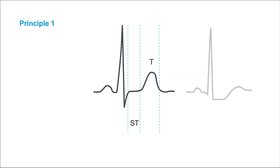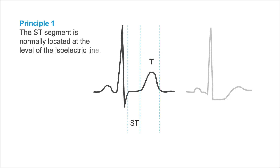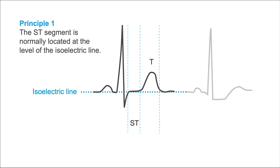Before we get started, I would like to give you two simple principles about the ST-segment and the T-wave. Principle number one says that the ST-segment is located at the level of the isoelectric line. To find the isoelectric line, go to the segment of the ECG that comes right after the T-wave and just before the next P-wave — that's the level of the isoelectric line.